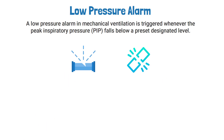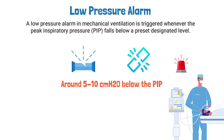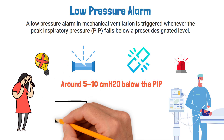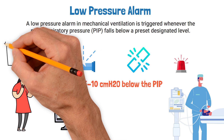The preset low pressure level for this alarm is typically set around 5 to 10 centimeters of water pressure below the peak inspiratory pressure. If this alarm is triggered, the respiratory therapist must first ensure that the patient is being ventilated. If the cause of the alarm is unknown, the patient should be manually ventilated until the source of the leak is identified.